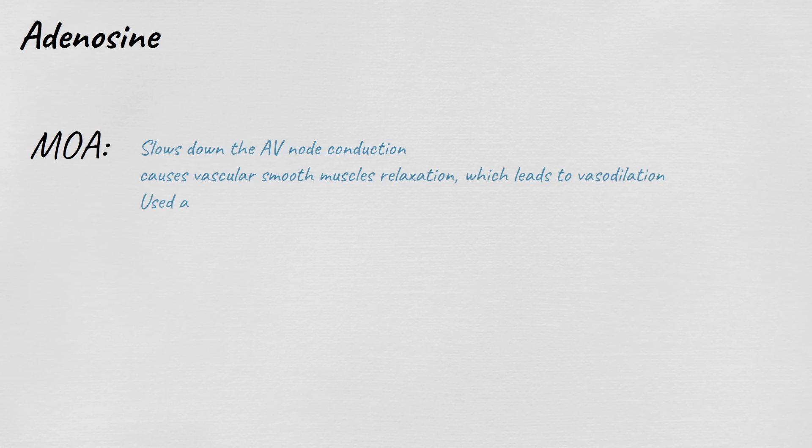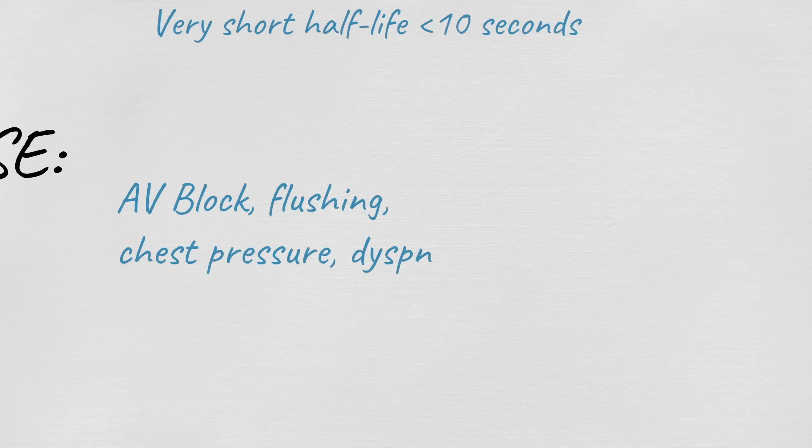And last agent that we have today is adenosine, which slows the AV node conduction. It also causes vascular smooth muscle relaxation which leads to vasodilation. It is used as a first-line rescue therapy in case of supraventricular tachycardia. It has a very short half-life of less than 10 seconds. Side effects include AV block, flushing, chest pressure, dyspnea, and bronchospasm.